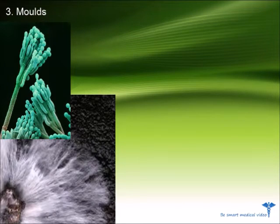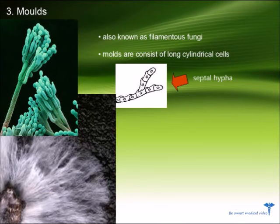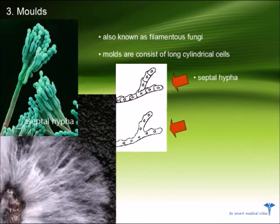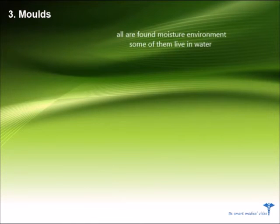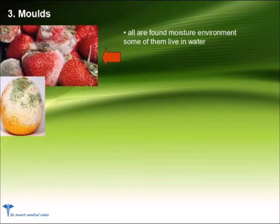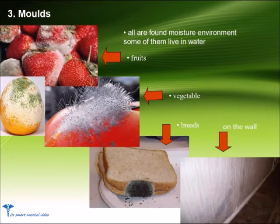Number 3: Molds, also known as filamentous fungi. Molds consist of long cylindrical cells. On the basis of cell wall they are of two types: those which have a cell wall are called septal hyphae, and those which do not have a cell wall are called aseptal hyphae. They are found in moist environments and some of them live in water. They can grow on fruits, vegetables, breads, and on walls.